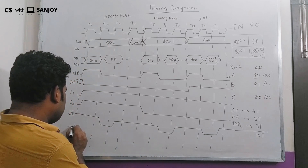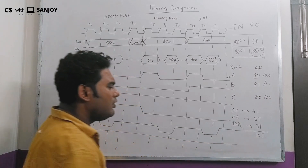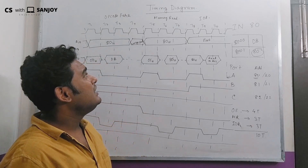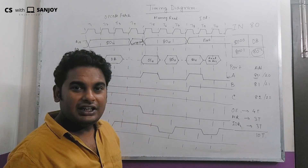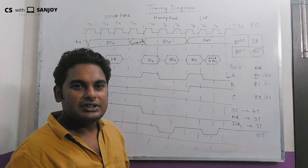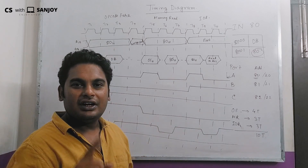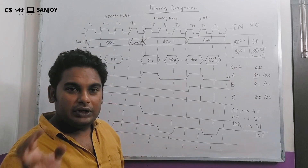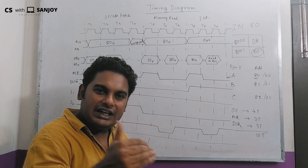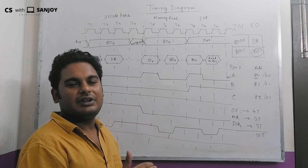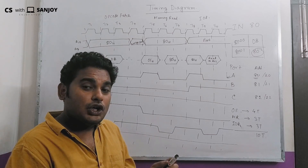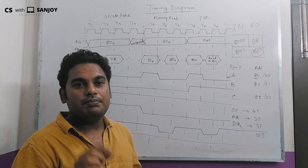This is the timing diagram of the IN instruction. In the IN instruction, there are 10 T-states total. The machine cycles are: opcode fetch, memory read, and IO read. For the IO read, the external peripheral device is accessed through the ports. There are three ports: Port A, Port B, and Port C, each being 8 bits. This is how the microprocessor communicates with IO devices through the 8255 PPI.